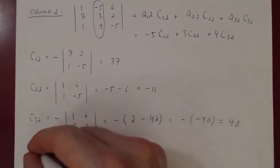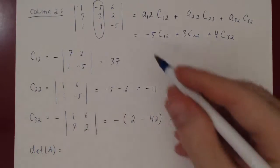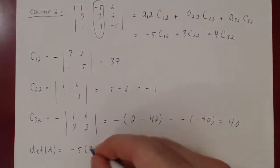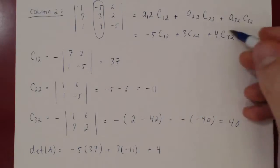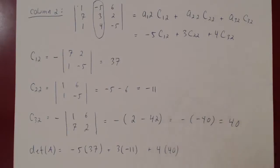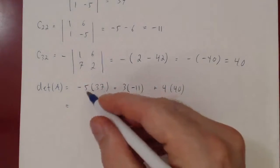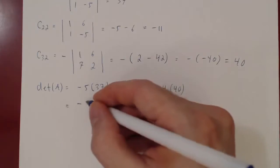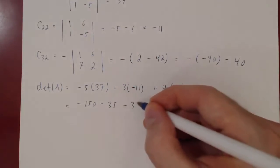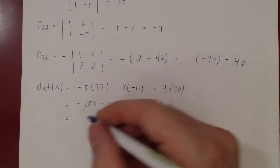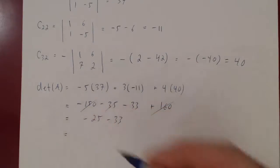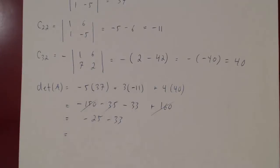Now we substitute back. The determinant of A equals -5(37) plus 3(-11) plus 4(40), which is -185 plus -33 plus 160. Simplifying: -150 plus 160 is 10; 10 minus 35 is -25; -25 minus 33 gives negative 58, just as before. The determinant is negative 58.